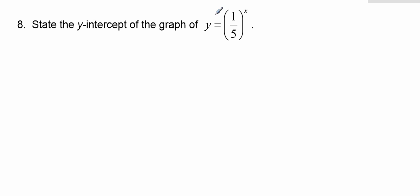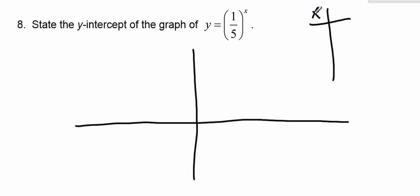State the y-intercept of the graph of this. So hopefully in your math class, you've graphed exponential functions an awful lot. Just in case, let's think about what would happen if I started with some x values, and here's some y values. So negative 2, negative 1, 0, 1, 2. This is the classic table of values.